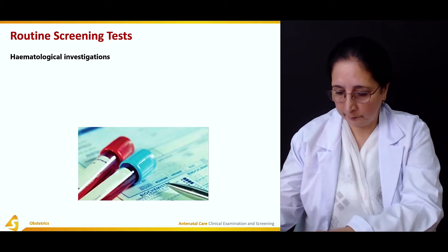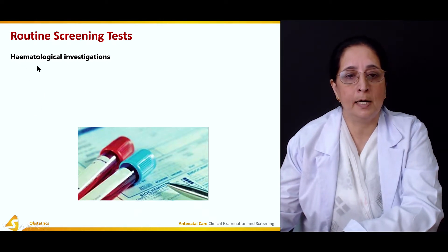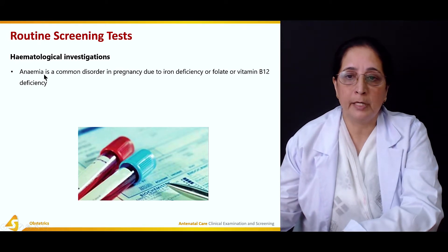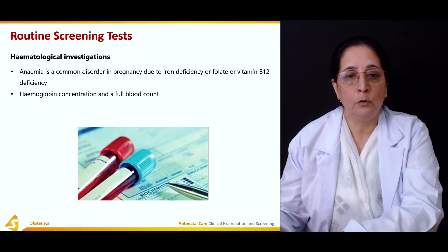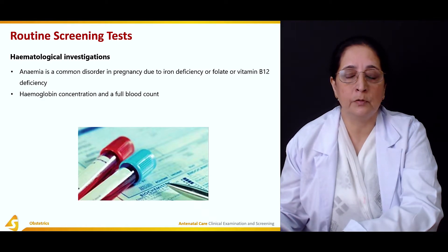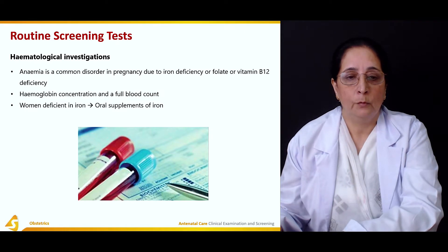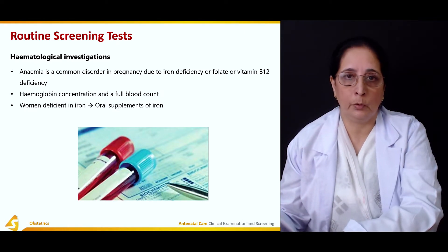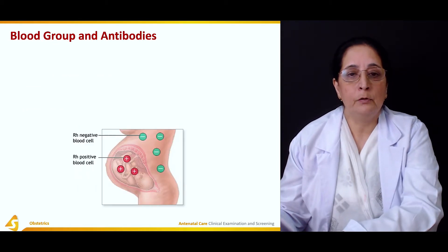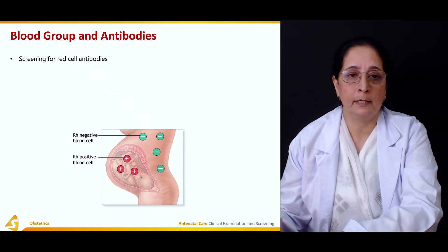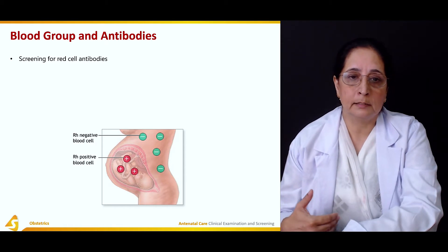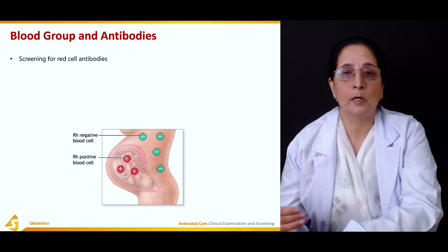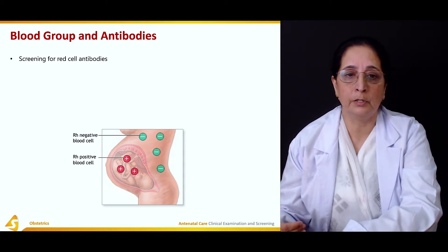Routine screening tests are performed on blood — hematological tests are important. Anemia is very common in pregnancy due to deficiency of iron and vitamin B12. Hemoglobin concentrations should be measured routinely and a full blood count is important. Women deficient in iron should be started on oral iron supplements. Blood grouping and antibody testing, including screening for red blood cell antibodies, is also important as red blood cell antibodies determine blood groups.